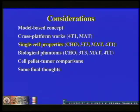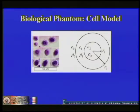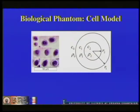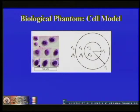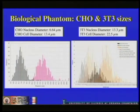Now let's talk about single cell properties. We need information about the single cell, so we developed a scattering model for a cell in the form of a concentric sphere, as shown here. On the left you can see H&E stained images of CHO cells, and on the right a depiction of what we use to develop the scattering model mathematics. We compare the power spectrum of the concentric sphere model to the power spectrum measured from the materials.